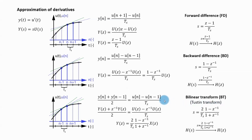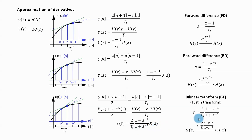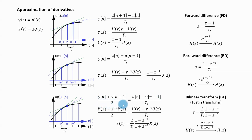When I apply the Z-transform to the bilinear approximation, I get that instead of multiplication by S, I have multiplication by (2/T_s)·(Z-1)/(Z+1). So to do the bilinear transform, take the transfer function in the Laplace domain and substitute S = (2/T_s)·(Z-1)/(Z+1), which gives the transfer function in the Z domain.